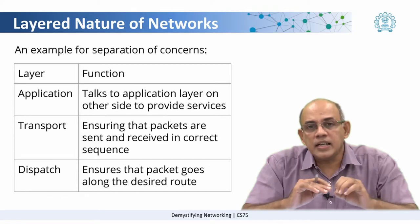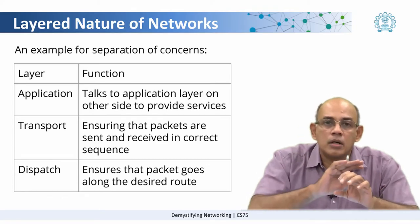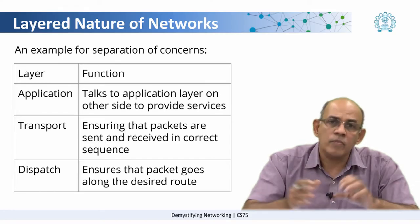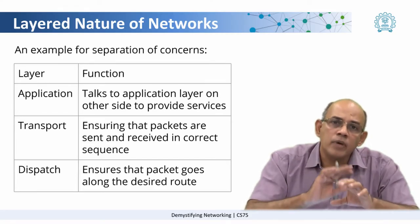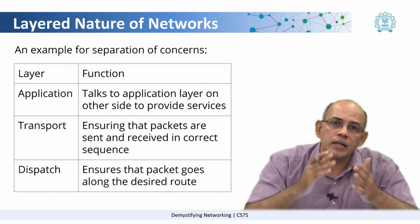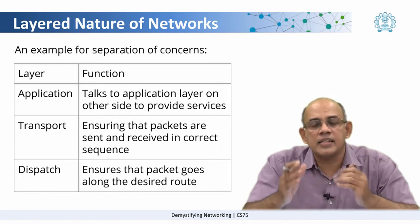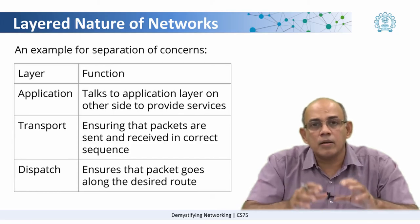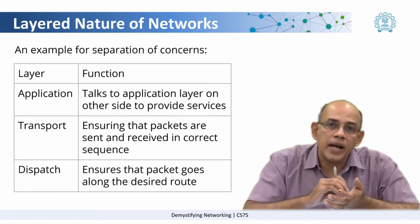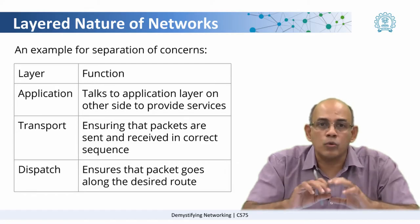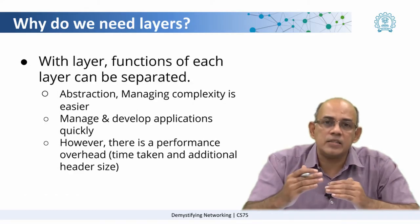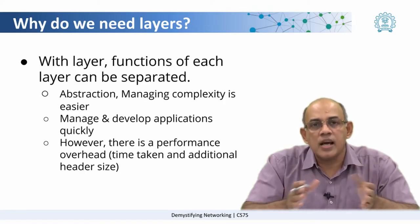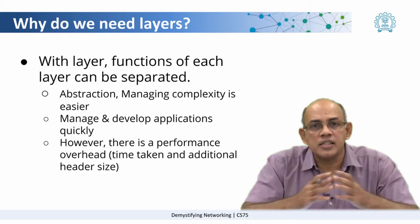The application layer now only worries about talking to the corresponding application layer on the other side of the network. The transport layer worries only about ensuring that packets are sent in the correct sequence and are received in the correct sequence. The dispatch layer worries only about making sure that the packet goes along the desired route. By separating these concerns, it becomes easier to manage the applications as well as to develop applications quickly.